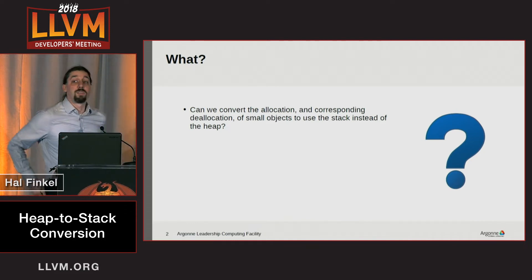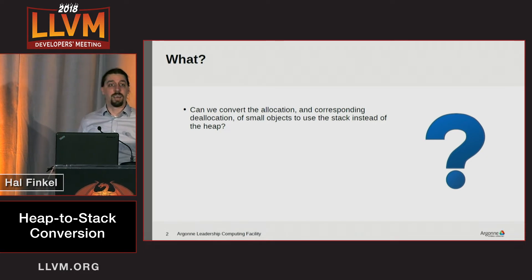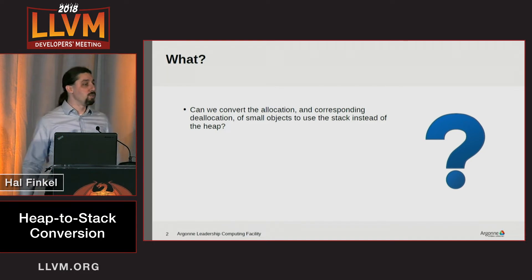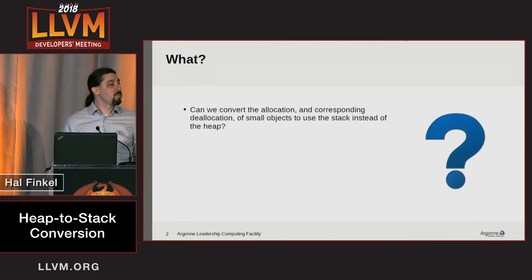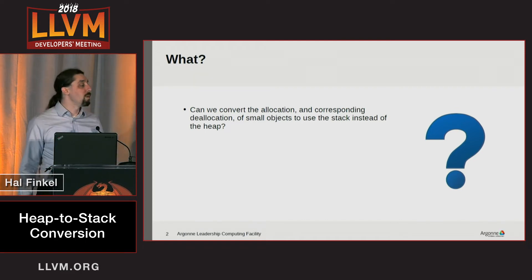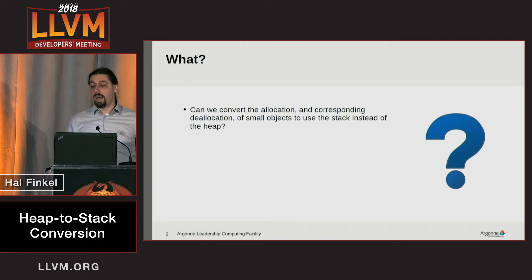So what is heap-to-stack conversion? Heap-to-stack conversion is a transformation where the compiler can take calls to malloc or new and their corresponding calls to delete or free, and convert them in certain situations into stack allocations. Generically, this can happen when the size of the allocation is constant and relatively small — though it can be done in other cases too.